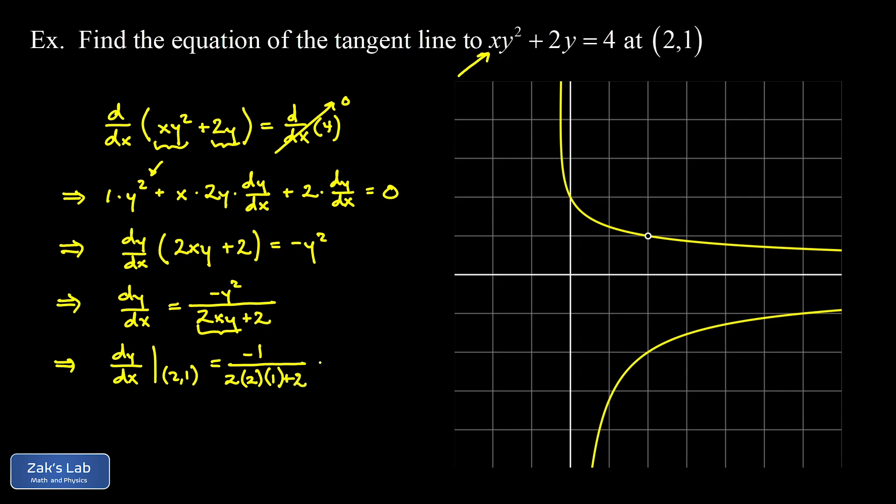So in that denominator I have a 4 + 2 or a 6. So this cleans up to -1/6 for the slope of the curve at the point that we've highlighted here in the graph. Now finally I want to get the equation of the tangent line. So I'm going to use the point slope formula for this. y minus the known y point is equal to the slope that's -1/6 times the quantity (x - 2).